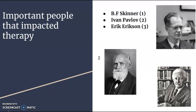Erik Erikson added to the Freudian theory. His beliefs and ideas are centered on an epigenetic principle, which proposes that all people go through a series of eight stages: trust versus mistrust, autonomy versus shame and doubt, initiative versus guilt, industry versus inferiority, identity versus confusion, intimacy versus isolation, generativity versus stagnation, and integrity versus despair. He created these eight stages based on psychosocial development, which is based on Freud's psychosexual theory.